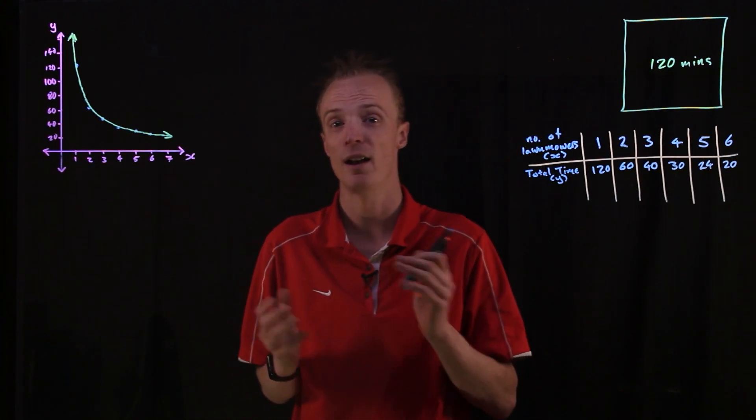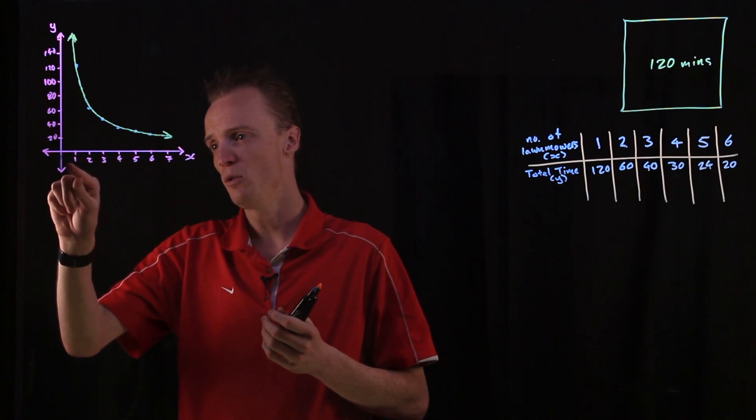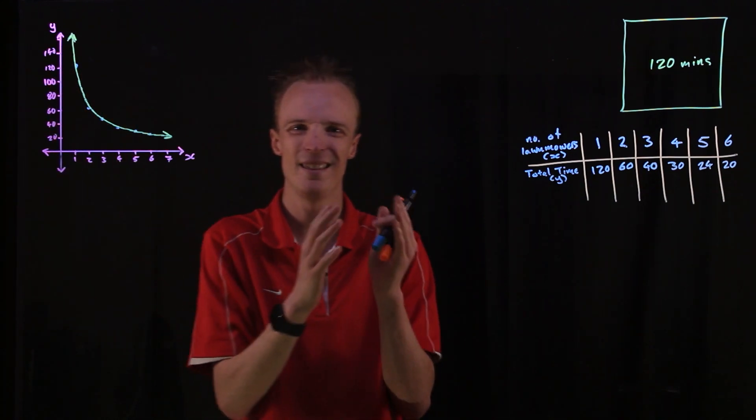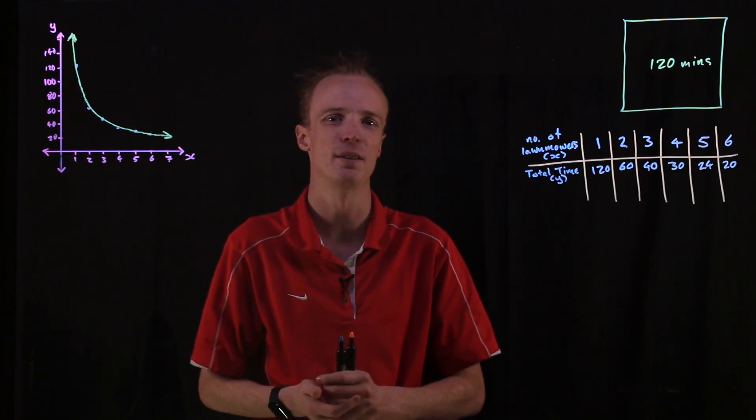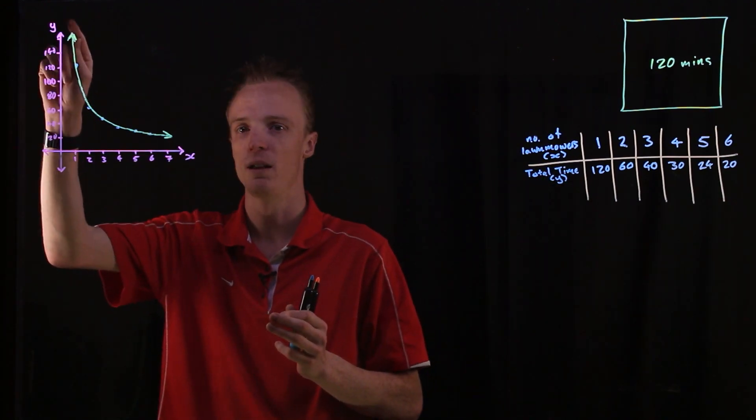Let's say we could have a half a person mowing, or a quarter of a lawnmower. As we continue approaching zero, in that theoretical time space, if we would only have half a lawnmower sort of working, we would double the time again.